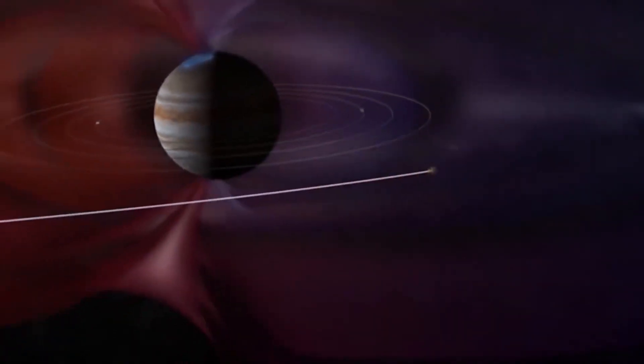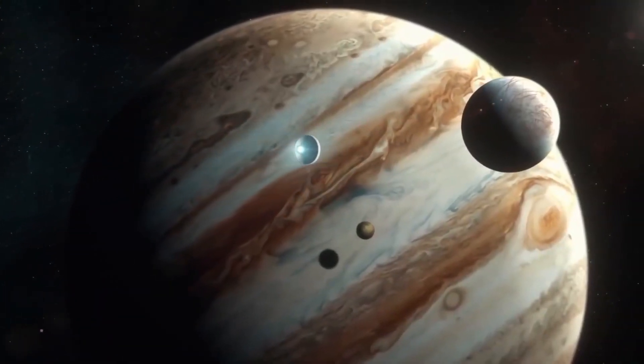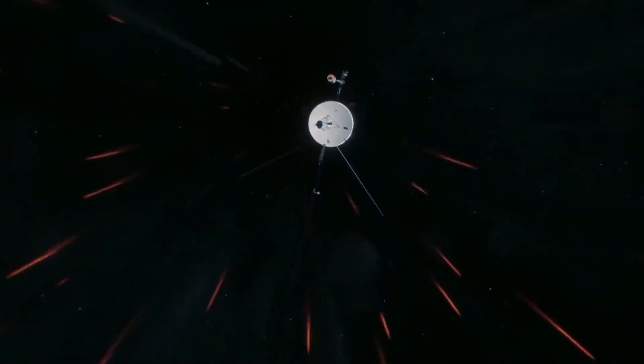Neptune revealed its great dark spot, a storm system that resembled Jupiter's great red spot, and a smaller, eastwardly moving cloud called Scooter, which went around the planet about every 16 hours. The planet was circled by diffuse, dusty rings, and six new moons were discovered.